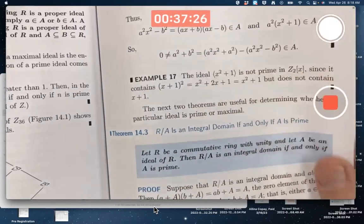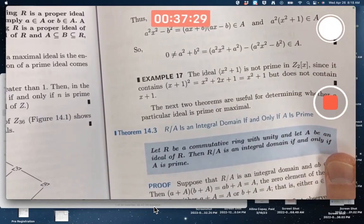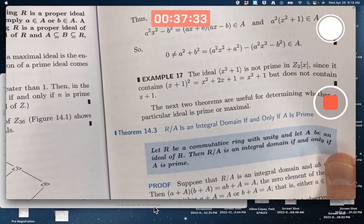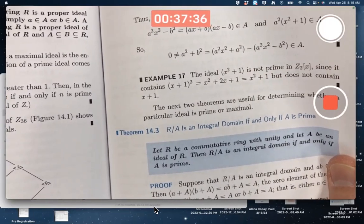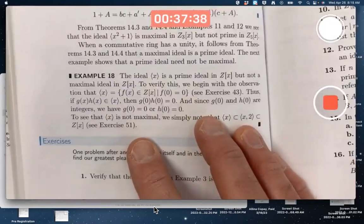It's very easy to prove based on these theorems that maximal ideals are prime ideals. But since not all integral domains are fields, that must mean there are prime ideals that are not maximal ideals. And this is an example that you should know.